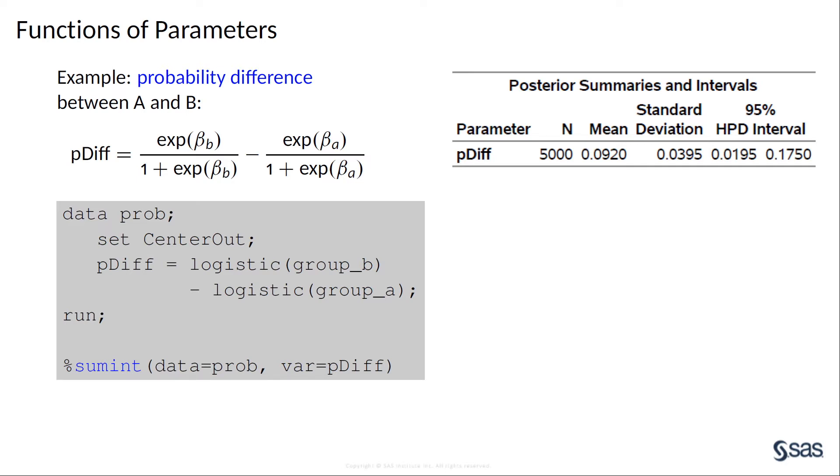In addition to a point estimate, you can get the whole distribution. Here, the black curve is the estimated posterior density, and the blue area represents the probability that pdiff is greater than zero.